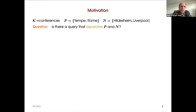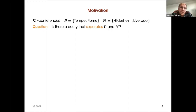This is the ontology-mediated querying session, but in some sense we are interested in the inverse problem. We have a given knowledge base — in this example about conferences — and we have some positive examples, which are the answers that we expect: in this case, Tempi and Rome. And we have some negative examples, which are the answers that we don't want: Hildesheim and Liverpool in this case.